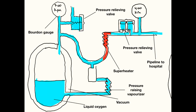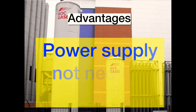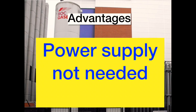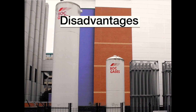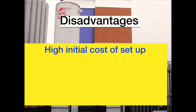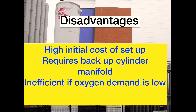The VIE is a very useful mechanism for storing oxygen. It has some advantages: it does not require a source of power, and it is highly efficient in terms of space compared to storing oxygen as a gas. The VIE also has some disadvantages: it has a high initial cost of equipment, it must have a backup cylinder supply, and it might be inefficient if low demand means that significant amounts of oxygen are being vented to the atmosphere. It may also present a fire risk and should be sited appropriately.